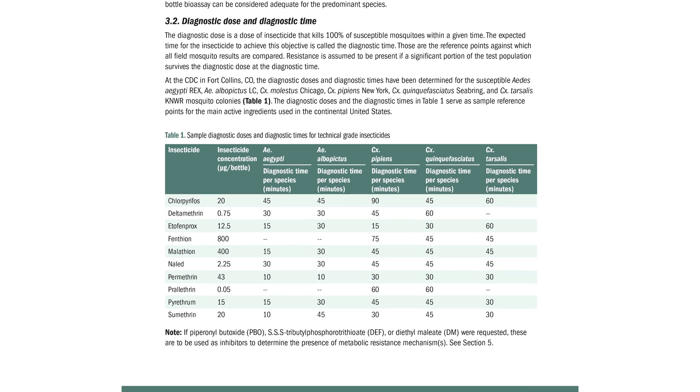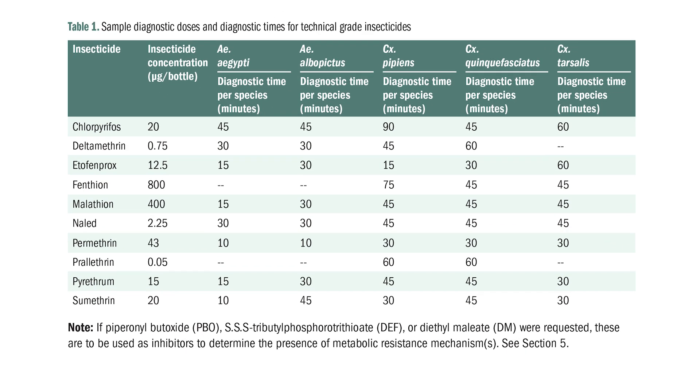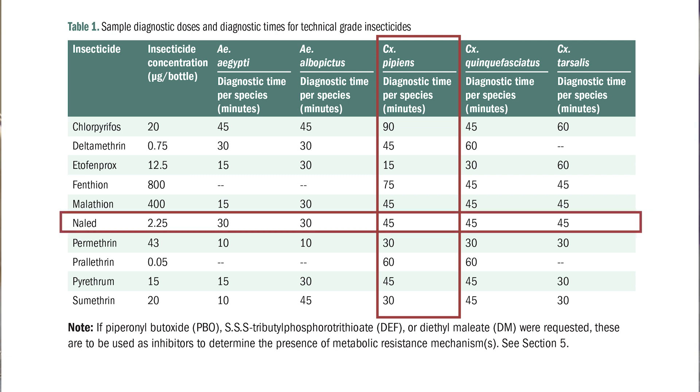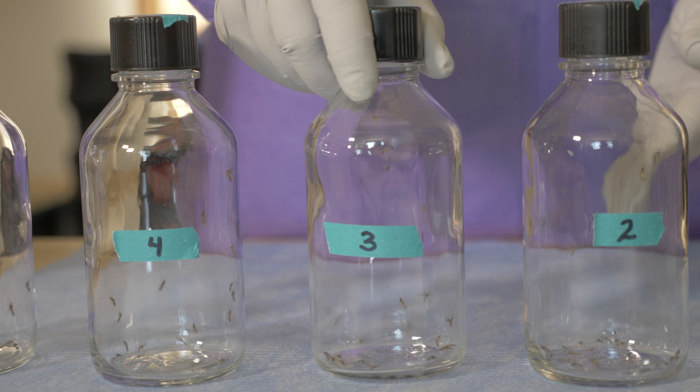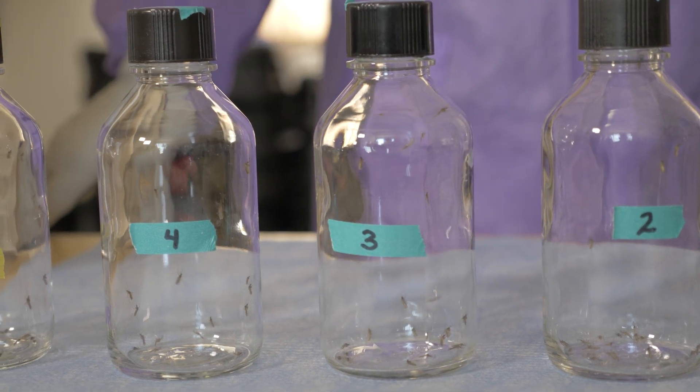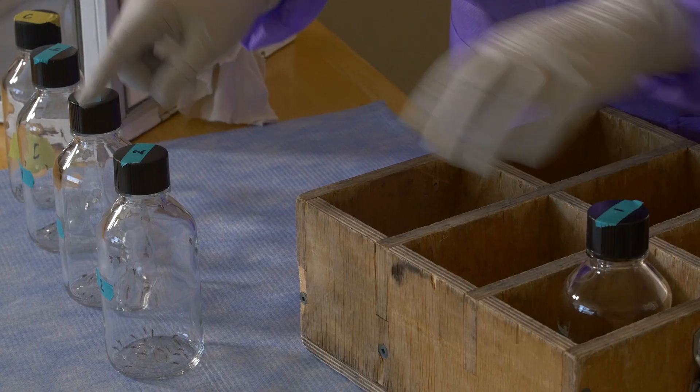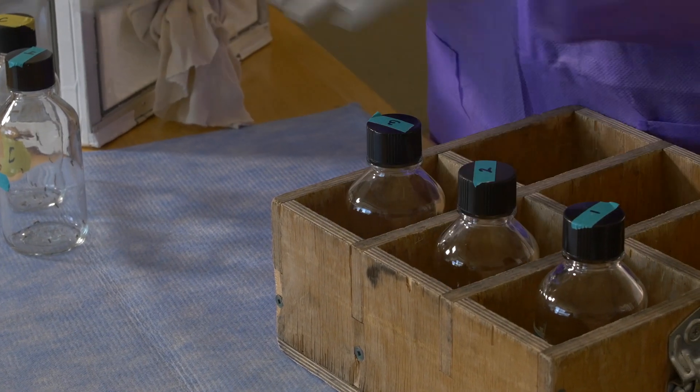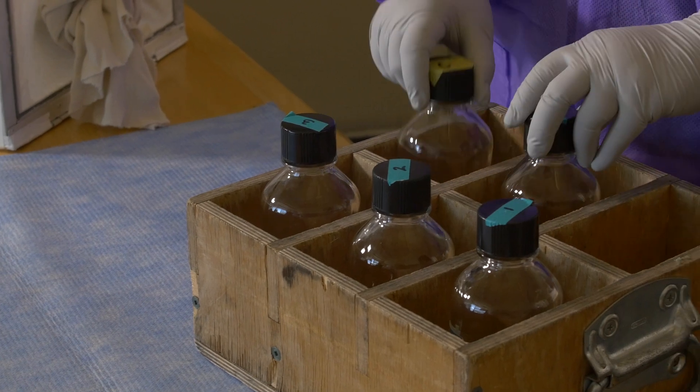Diagnostic doses and threshold times are determined using susceptible mosquitoes or those mosquitoes that haven't yet developed resistance to insecticides. For example, in this table, 45 minutes is the threshold time for Culex Pipiens exposed to 2.25 micrograms of Naled. Mosquitoes that have developed resistance to insecticides will take longer to die. The shape of the mortality curve beyond the threshold time gives valuable information on how strong the expressed resistance is.